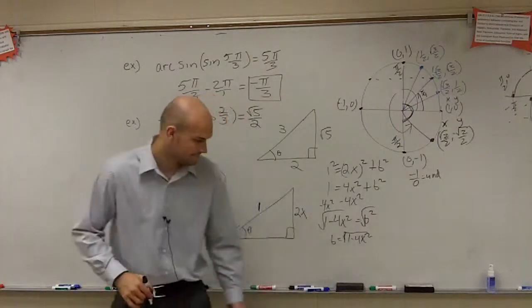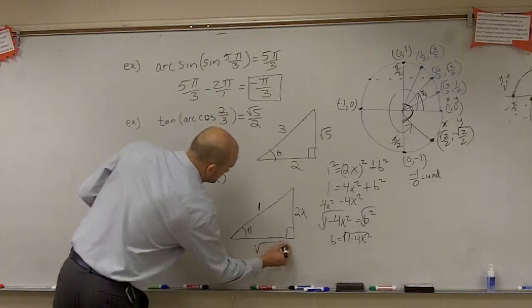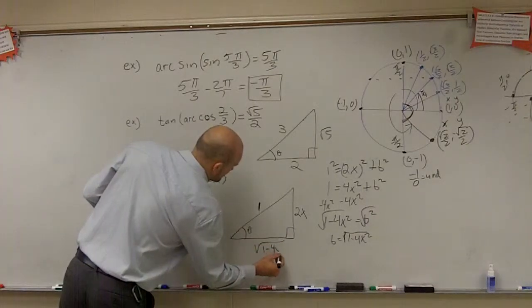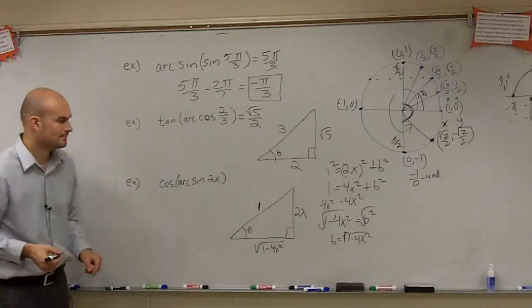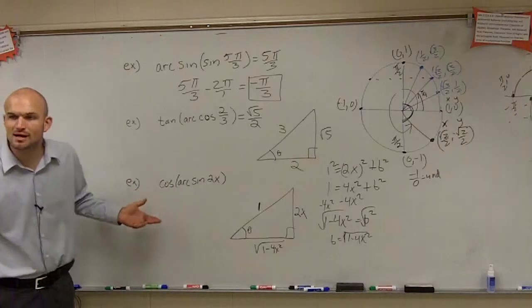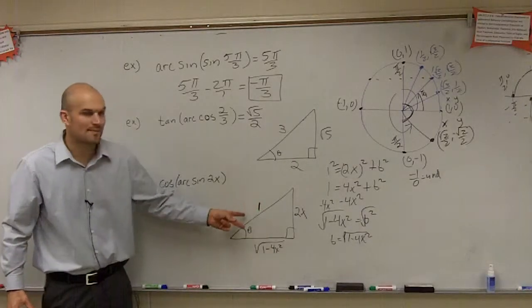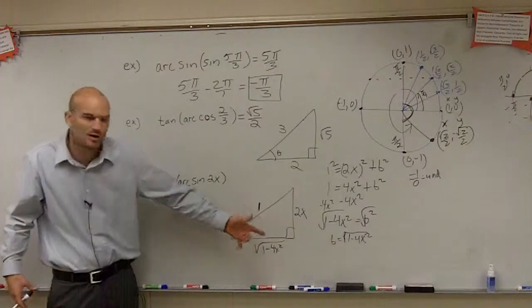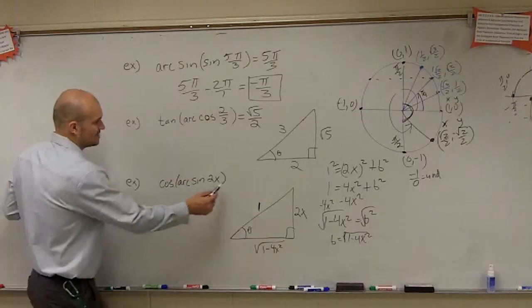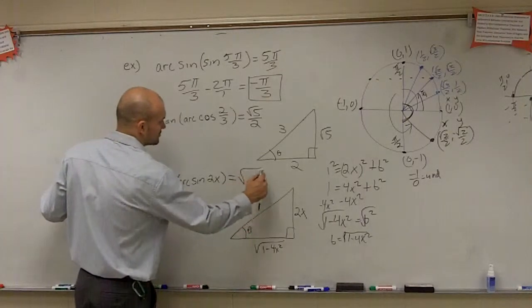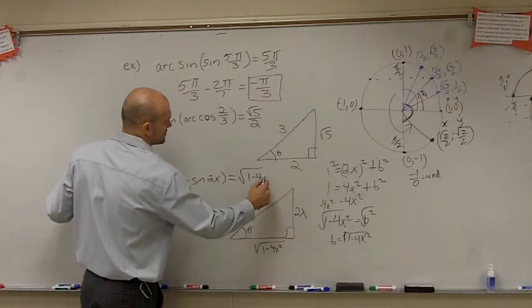And no, you cannot simplify it. Okay? So therefore, to find the cosine, what's the cosine of the function? Adjacent over hypotenuse. Well, since my hypotenuse is just 1, it's just going to be the adjacent side. So my final answer is going to equal the square root of 1 minus 4x squared.